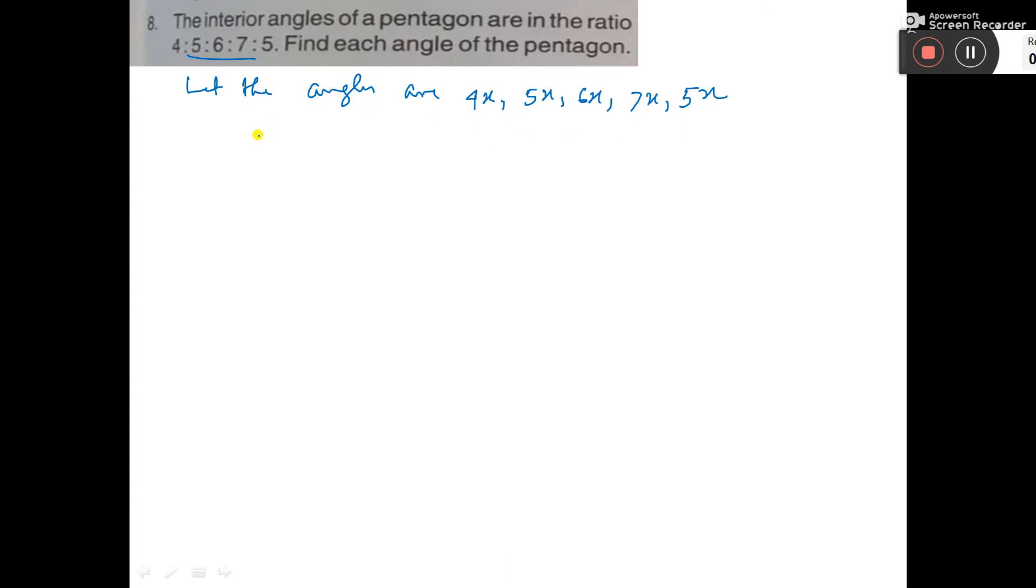Now if we add these angles: 4x + 5x + 6x + 7x + 5x is equal to (2n - 4) × 90. Here n is equal to 5 since this is a pentagon.